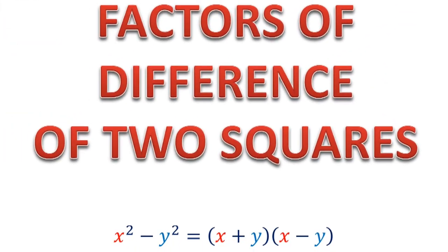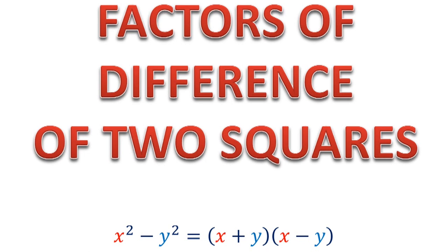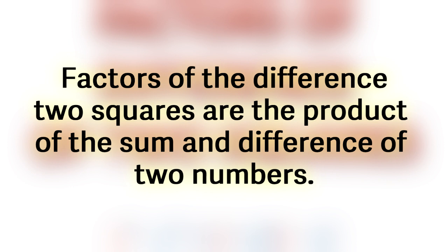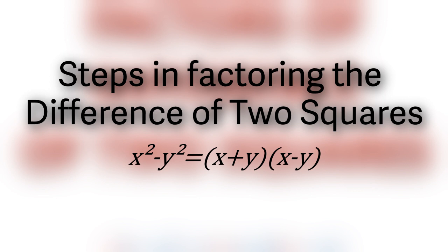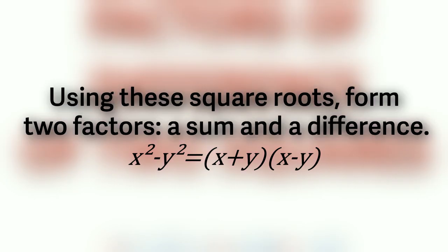First, factors of difference of two squares. Factoring the difference of two squares is a special type of factoring, a problem that is often used in mathematics. The factors of the difference of two squares are the product of the sum and difference of two numbers. Steps: first, get the principal square root of each of the two squares. Second, using these square roots, form two factors — a sum and a difference.